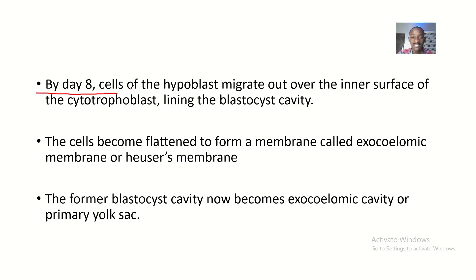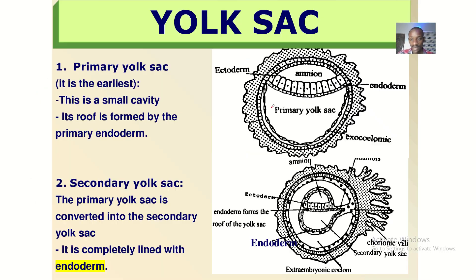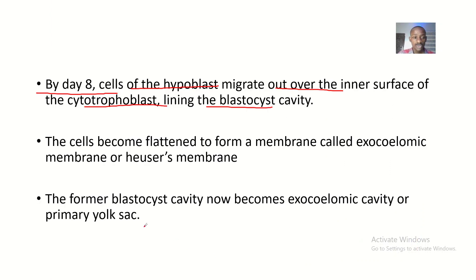By day 8, the cells of the hypoblast migrate out over the inner surface of the cytotrophoblast, which is lining the blastocyst cavity. This inner portion is the hypoblast. These cells become flattened to form a membrane called the exocoelomic membrane, or the Heuser's membrane. The former blastocyst cavity now becomes the exocoelomic cavity, or the primary yolk sac.